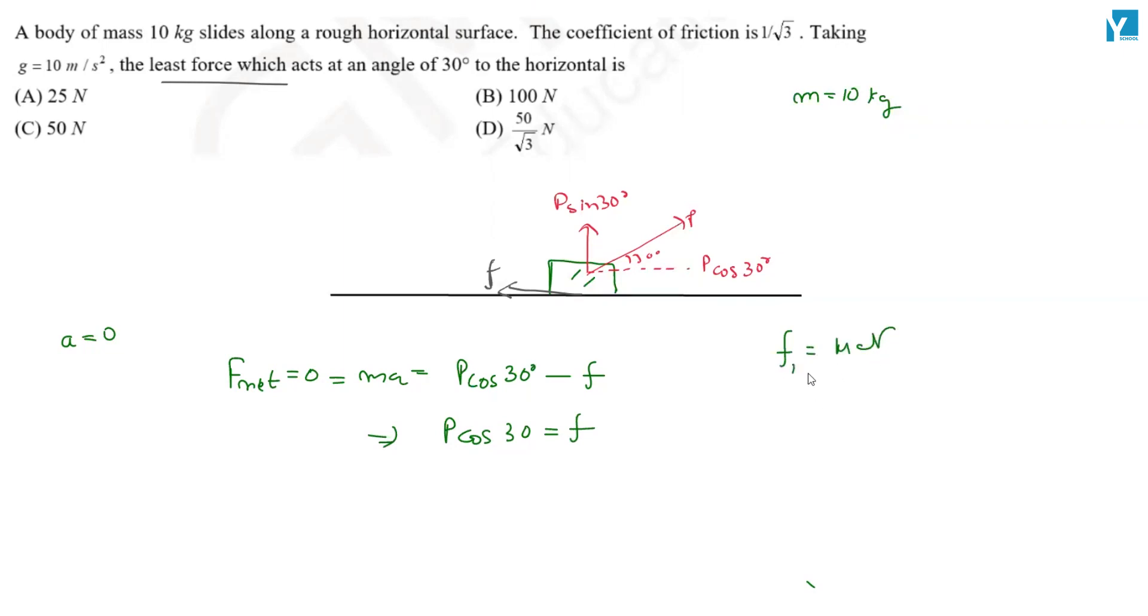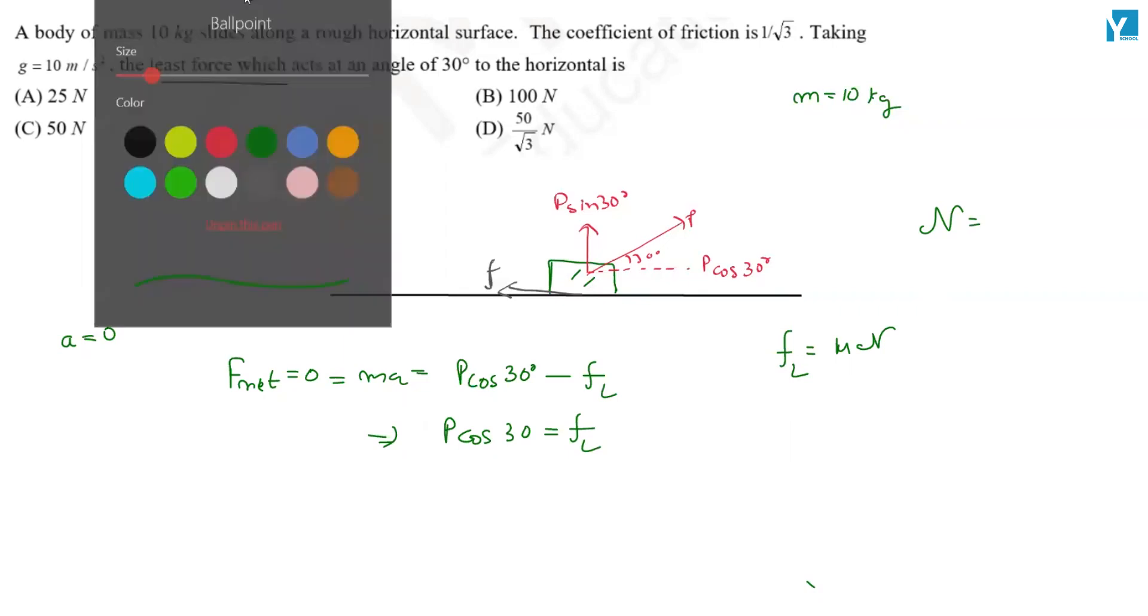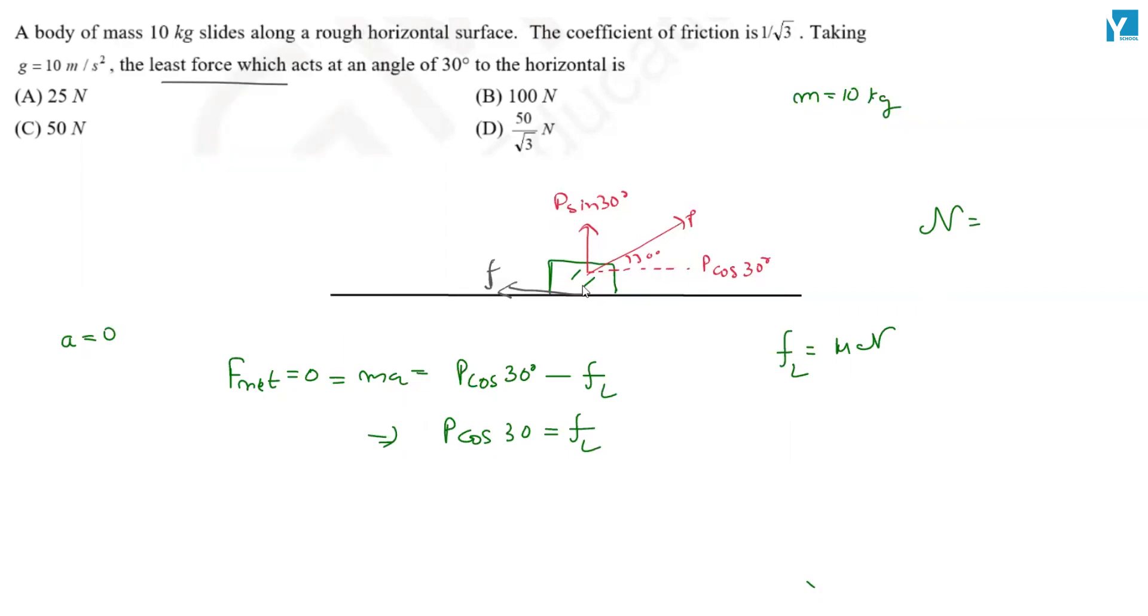So mu into normal. So normal is equal. If we talk about normal, when we set the picture, if we set equilibrium in the vertical direction, this is the weight mg. And the normal force is upward. So normal is equal to mg minus P sin 30 degrees.